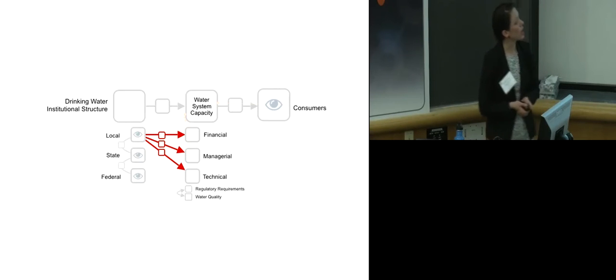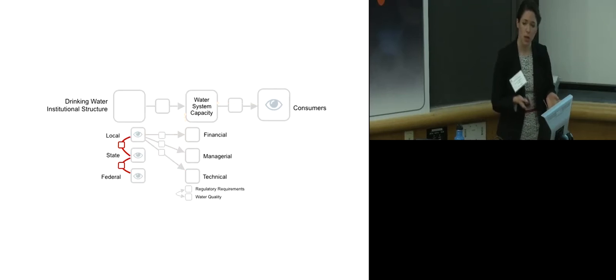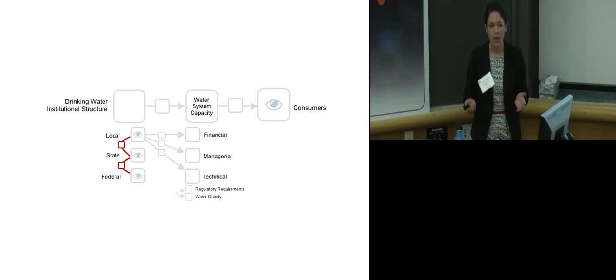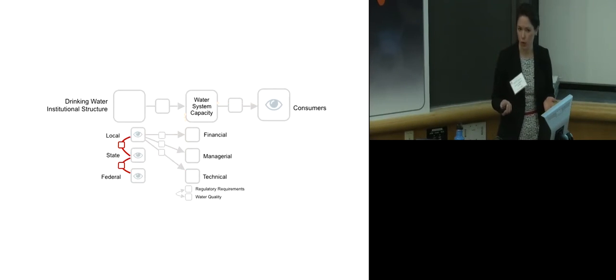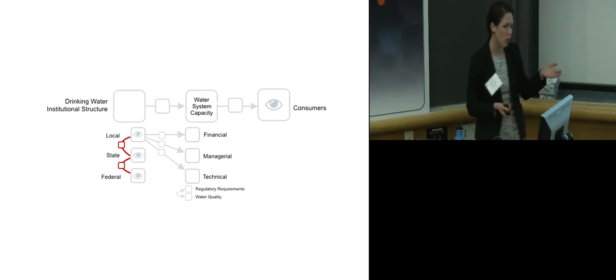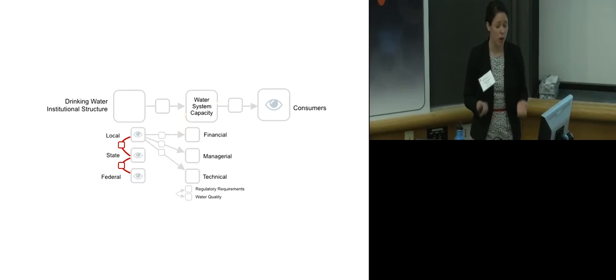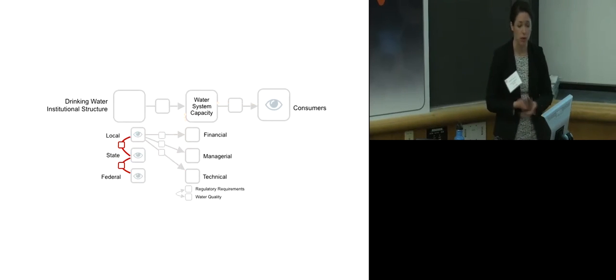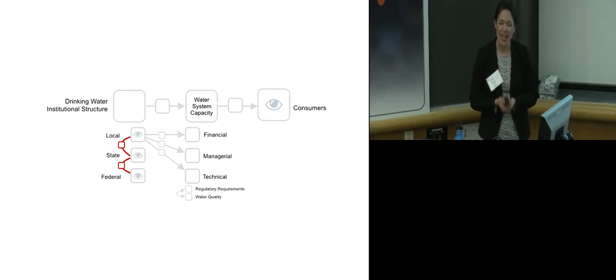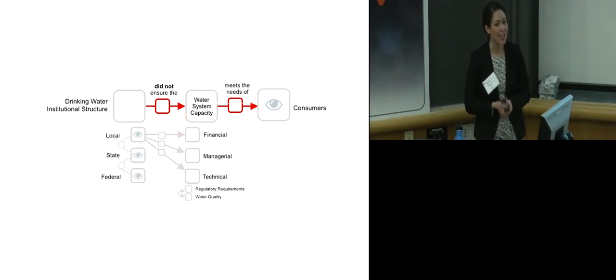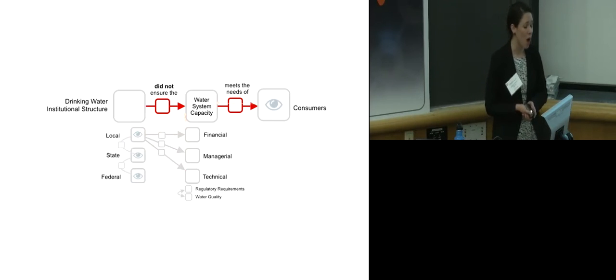Also, there was a failure of a support system for the local officials. The state staff were not technically trained on the rules, and so they couldn't support the local staff in implementing the rules appropriately. Also, the states didn't call upon EPA, their technical experts, to support during the crisis. So what ended up happening was that the drinking water institutional structure did not ensure the water system capacity met the needs of consumers.